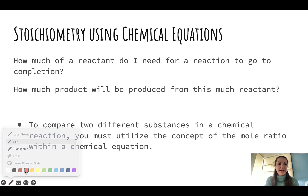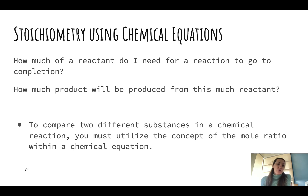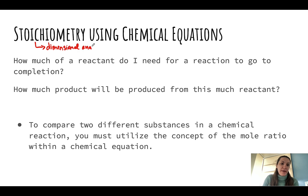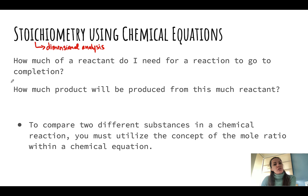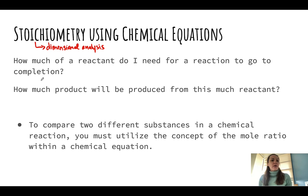Today we are going to be talking about how to use mole relationships with our stoichiometry. Stoichiometry is a fancy way for us to talk about the dimensional analysis that we've been doing previously in our class. It's using mathematical relationships. The two kinds of questions that our mole ratios will help us solve are: how much of a reactant will I need for a reaction to actually happen and us to produce a certain amount of something?